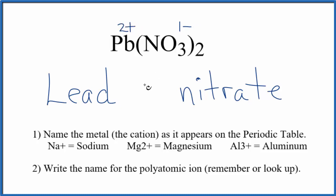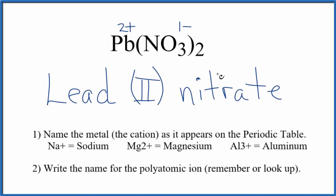To show that in the name, we write Roman numeral II in parentheses. So the name for Pb(NO₃)₂ is lead(II) nitrate. If you're given the formula, the subscript 2 tells you lead has a 2 plus ionic charge, so you know you need 2 nitrate ions — each 1 minus — to balance the charge and give a net charge of zero. This is Dr. B with the name for Pb(NO₃)₂, lead(II) nitrate. Thanks for watching.